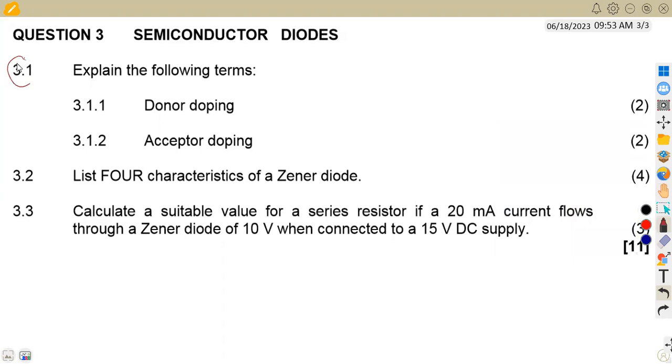The first part of our question was to explain the following terms: 3.1.1, that is donor doping. Remember, I've got two types: the donor doping and the acceptor doping. So the donor doping is actually a process of generating free electrons. This is the process of generating free electrons.